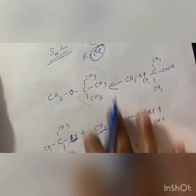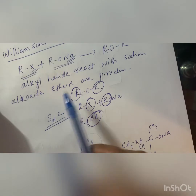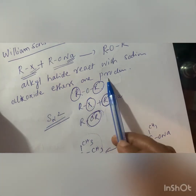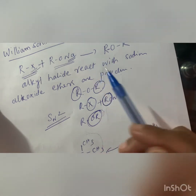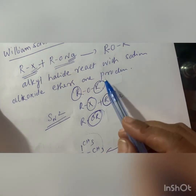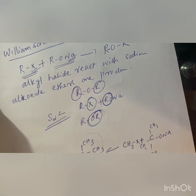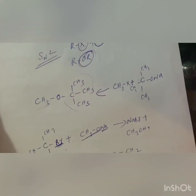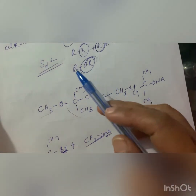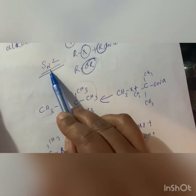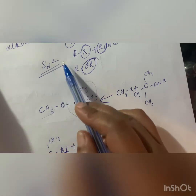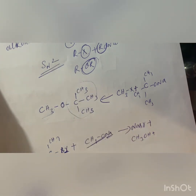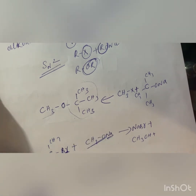To summarize Williamson's synthesis: when alkyl halide reacts with sodium alkoxide, ethers are produced. Both symmetrical and asymmetrical ethers can be prepared. The problem is that ethers in which both R groups are tertiary cannot be prepared, because the reaction is by SN2 mechanism — nucleophilic substitution on RX. RX must be primary; secondary or tertiary RX will not work for Williamson's synthesis.